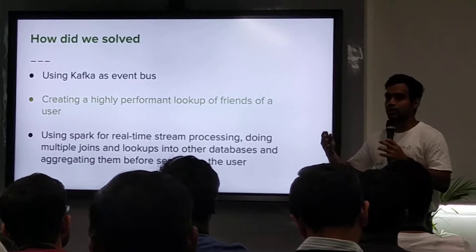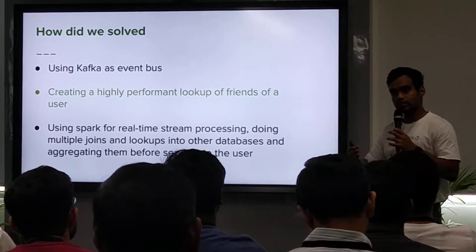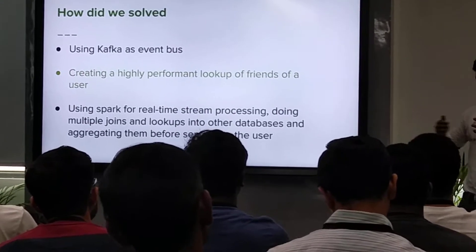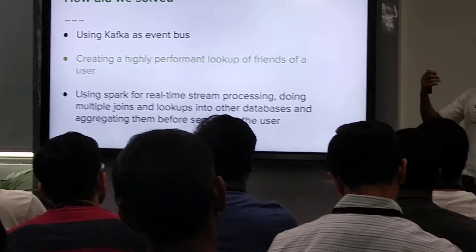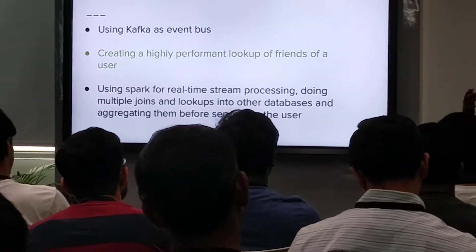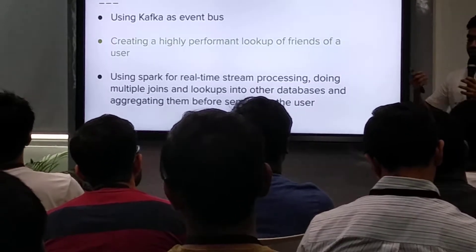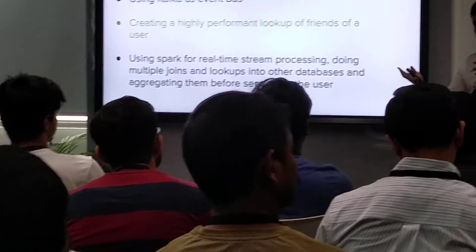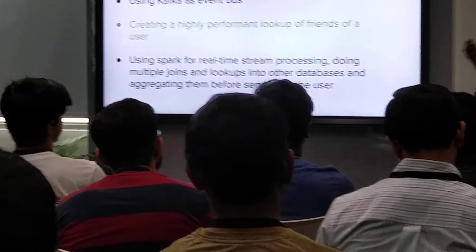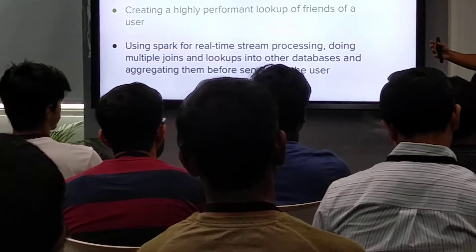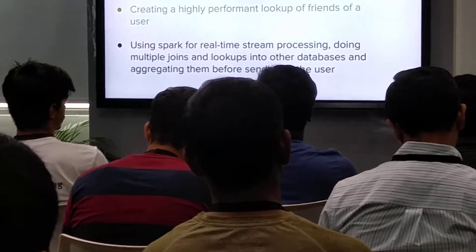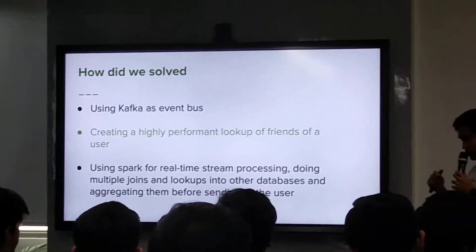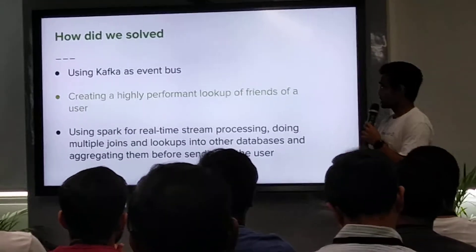If the consumer lag increased, we increased the system slowly. There was a bit of latency to the user, but that was negligible — if I get an indicator even after 30 seconds of my friend joining, that was fine for us. But we could easily catch up by slowly scaling up. If we didn't do that, our system would eventually fail and that would be a blackout. So Kafka helped us avoid that.